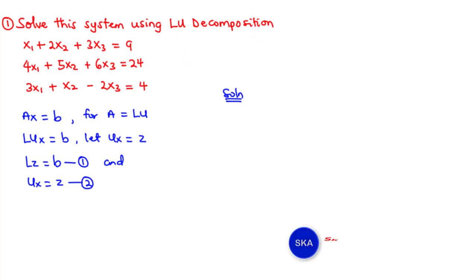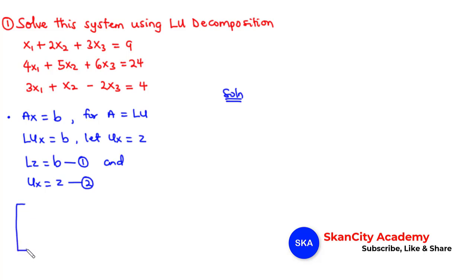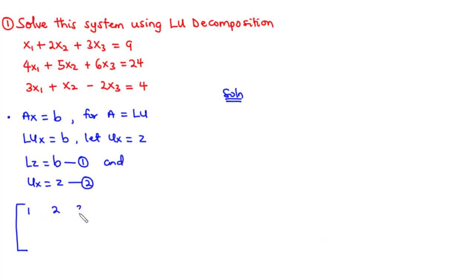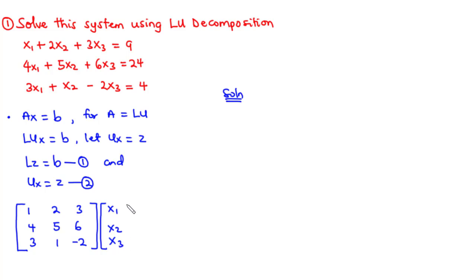Now let's begin the actual solution process. We represent this system in the form AX equals B. We have the coefficient matrix with elements 1, 2, 3, 4, 5, 6, 3, 1, negative 2, times the column matrix X1, X2, X3, and that is equal to the values on the right-hand side: 9, 24, and 4.